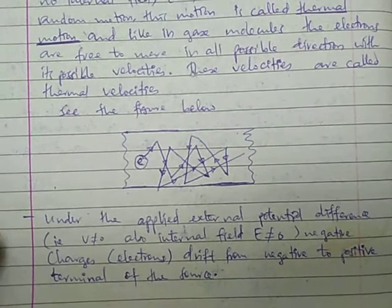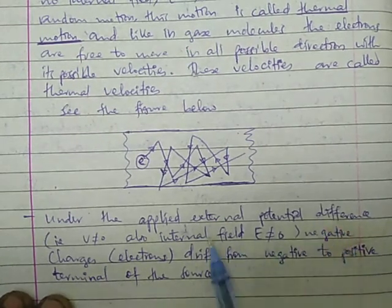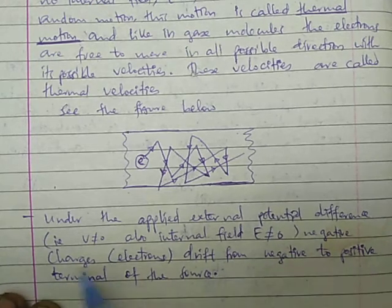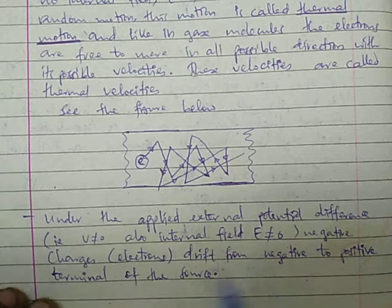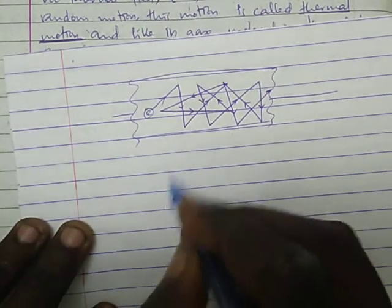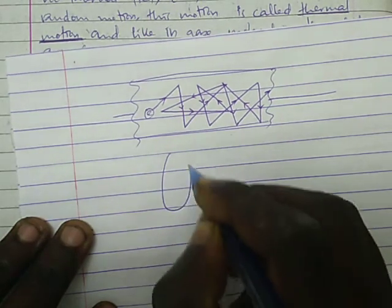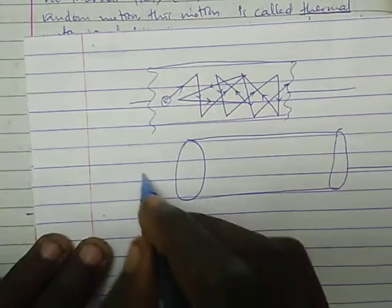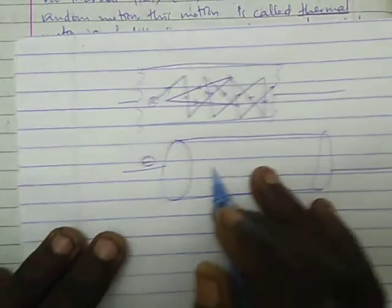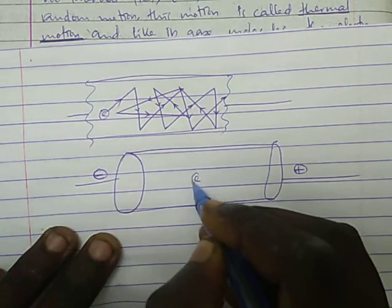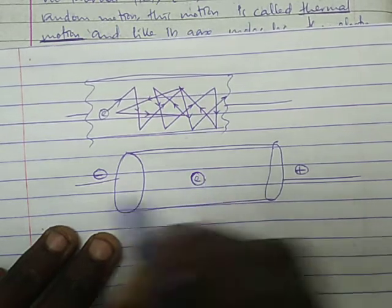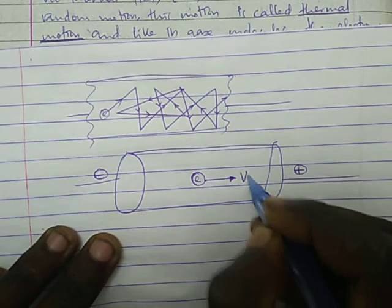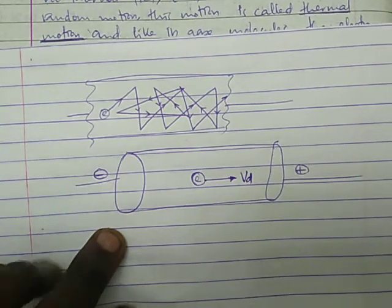Under an applied external potential difference, if V is not equal to zero, the internal electric field E will also not be equal to zero. The negative charges — that is, electrons — drift from the negative to the positive terminal of the source. For example, in a conductor with a negative terminal on one side and a positive terminal on the other, the electron will tend to move with a certain velocity VD, which we call the drift velocity.